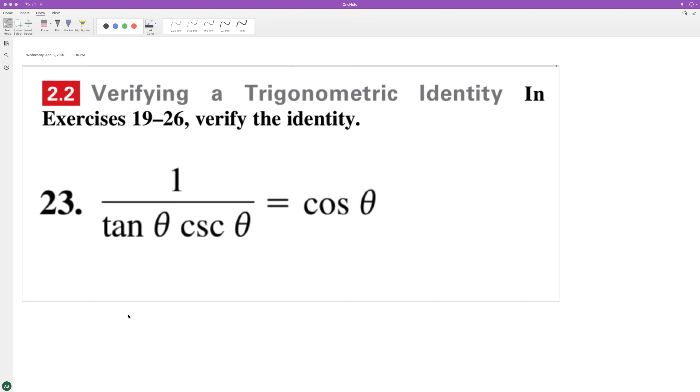Verify the following trigonometric identity. What we'll have here is actually the same thing as 1 over tangent theta times 1 over cosecant theta, which can be converted into cotangent theta times sine of theta.